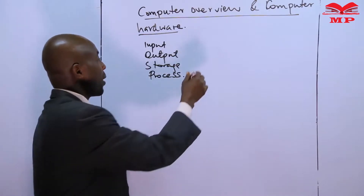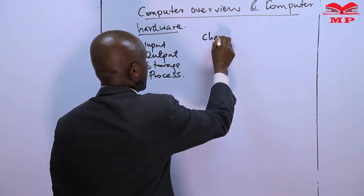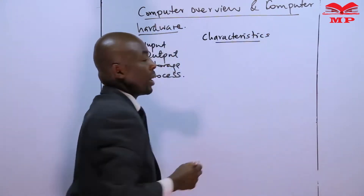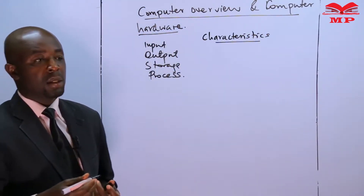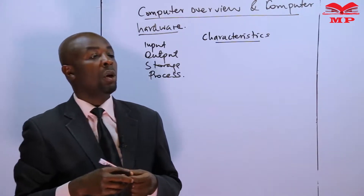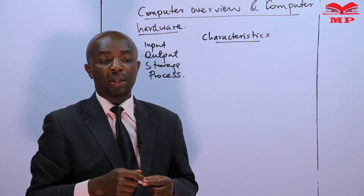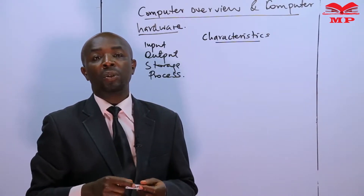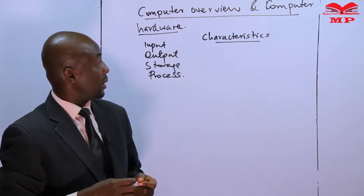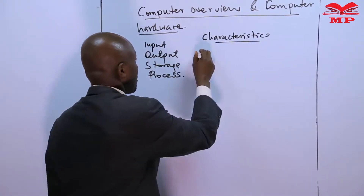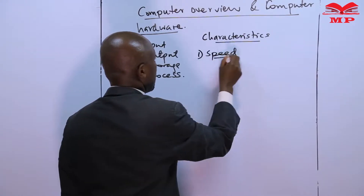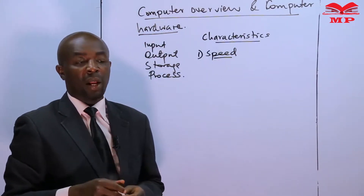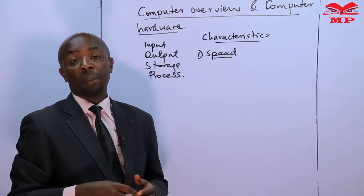Next, we look at the characteristics of a computer system. This will justify why people buy computers — why many people are moving from manual systems to computerized systems. One of the characteristics of computers talks about speed. Computers can process millions of instructions in one second, and that is why many people are buying them.